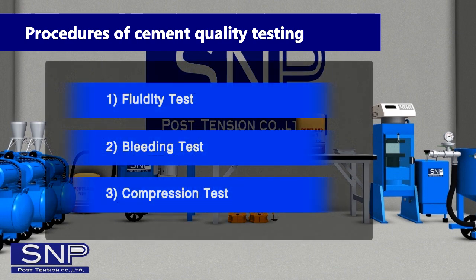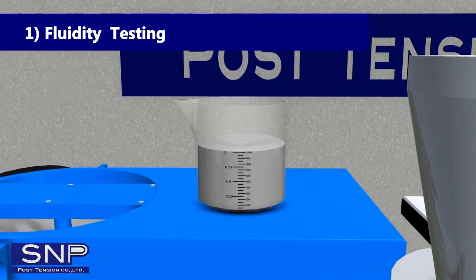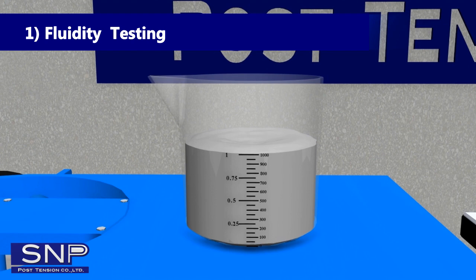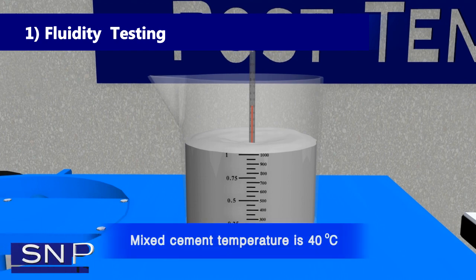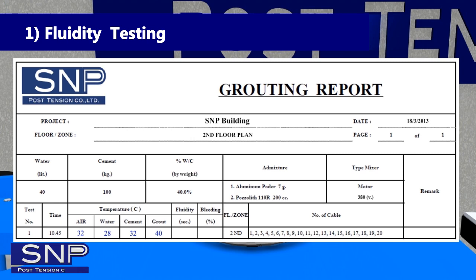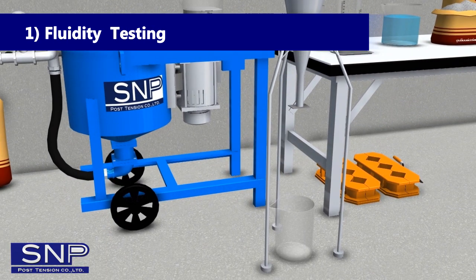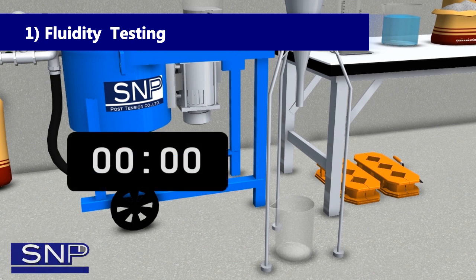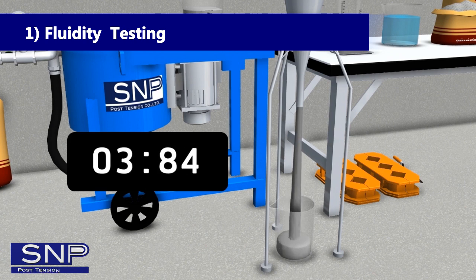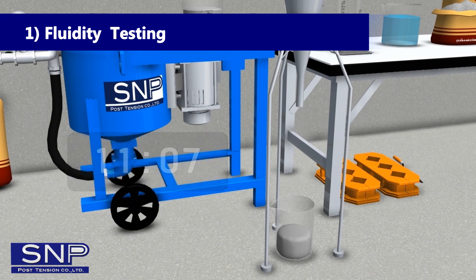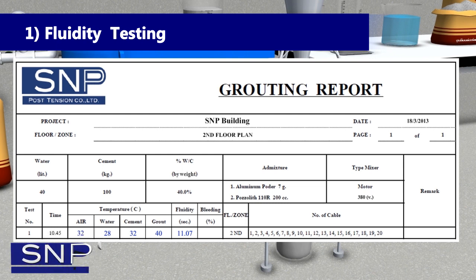Procedures of Cement Quality Testing: After finishing the cement mix, the test is divided into three subtests: 1. Fluidity Test, 2. Bleeding Test, 3. Compression Test. For Fluidity Testing: measure the temperature of mixed cement and record the value in the table — cement temperature should not exceed 40°C. Prepare fluidity testing equipment by closing the funnel and pouring 1 liter of cement in. Let cement flow and record the time. The standard time of cement fluidity must be more than 11 seconds.